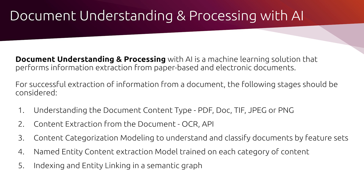Every enterprise deals with documents and they come in different forms and variety. One of the things we aim to do with document AI is to help you as a business classify or search your documents, adapt to different document variations coming in, be able to extract structured information from the document, and also save overall employee time — in other words, add to your productivity as an organization. Document understanding with AI is a machine learning solution that performs information extraction from paper-based and electronic documents. To be able to do that, you need to understand the document type: whether it's a PDF, JPEG, or PNG.